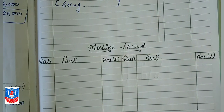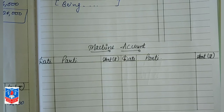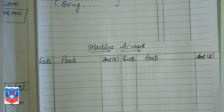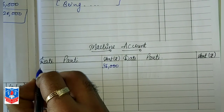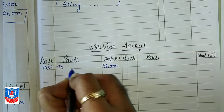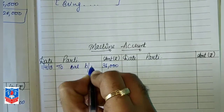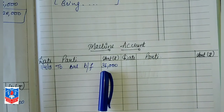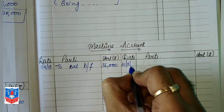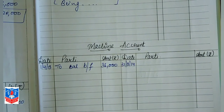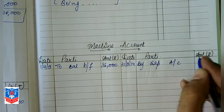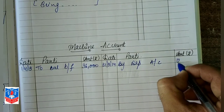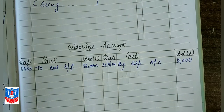After journalizing, we prepare the Machine Account. The balance given is 36,000. The nature of machine is always debit because it is an asset for the business, so it always has a debit balance. On 1/4/13, we record balance brought forward: 36,000 on the debit side. On 31/3/14, we record depreciation: By Depreciation Account 12,000.